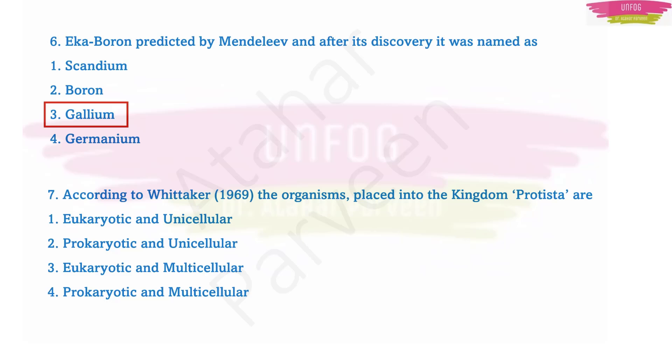Question number seven: according to Whittaker, the organisms placed into the kingdom Protista are... See the options: eukaryotic and unicellular, prokaryotic and unicellular, eukaryotic and multicellular, prokaryotic and multicellular. One thing which you should make clear is that Protista includes eukaryotic and unicellular organisms.